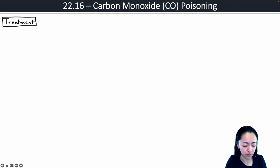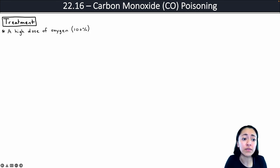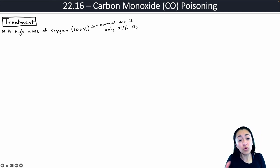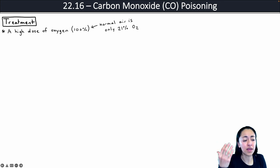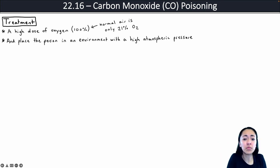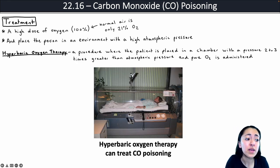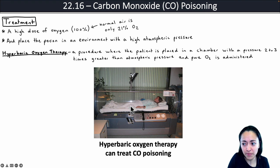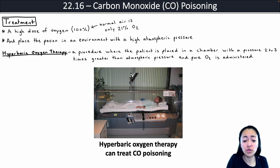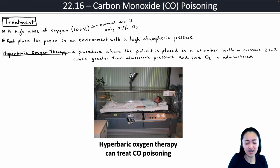If somebody is exposed to high levels of carbon monoxide, there are two things you can do: administer a high dose of oxygen — pretty much 100% oxygen — and place the person in an environment with high atmospheric pressure to help drive oxygen into the body. Normally air is only about 21% oxygen. Both of these types of treatment can be performed using hyperbaric oxygen therapy, a procedure where the patient is placed in a chamber where the pressure is about two to three times greater than atmospheric pressure, and pure oxygen is administered.